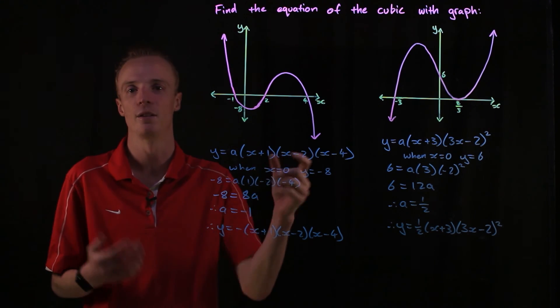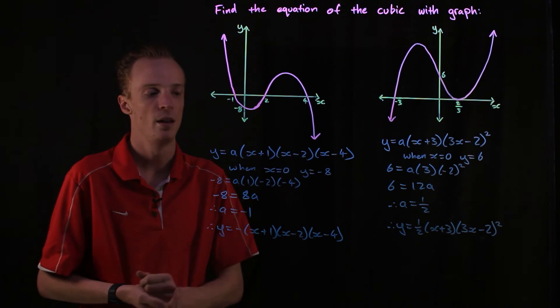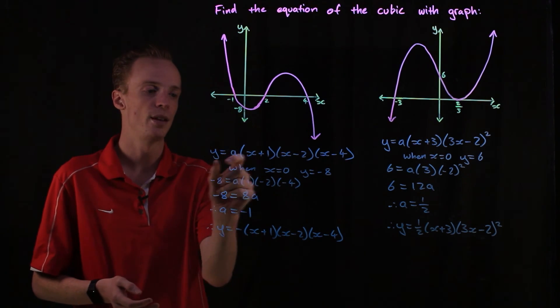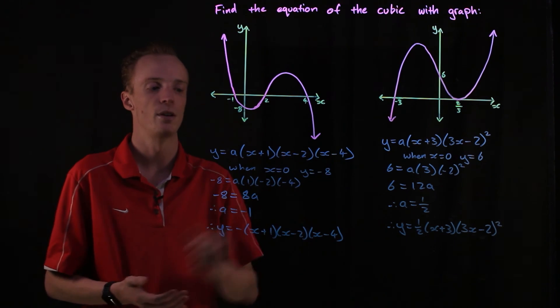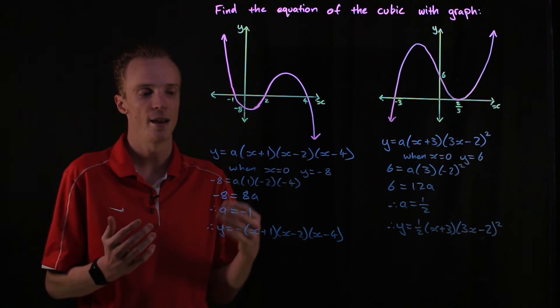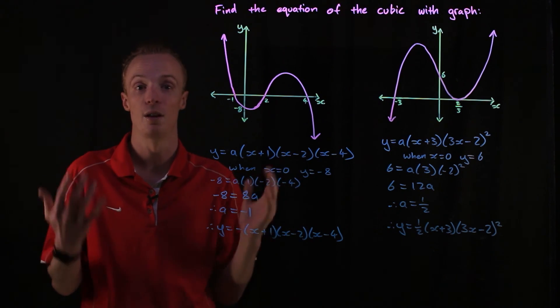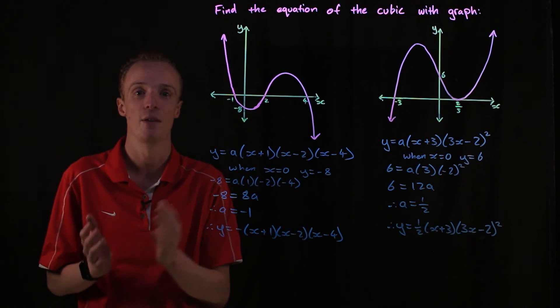Once you've identified that, represent it in this factorized form like I've got here. And then you need to identify what the value of a is going to be by substituting another point. It doesn't have to be the y-intercept, but it does have to be a different point than the x-intercepts that you've used to get to this stage here.